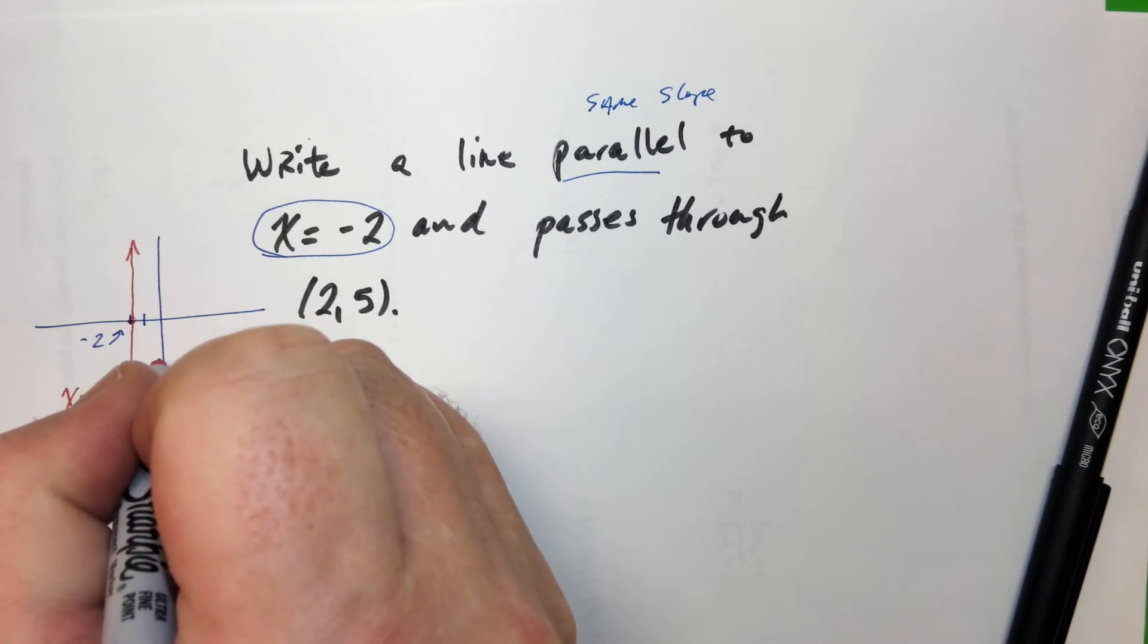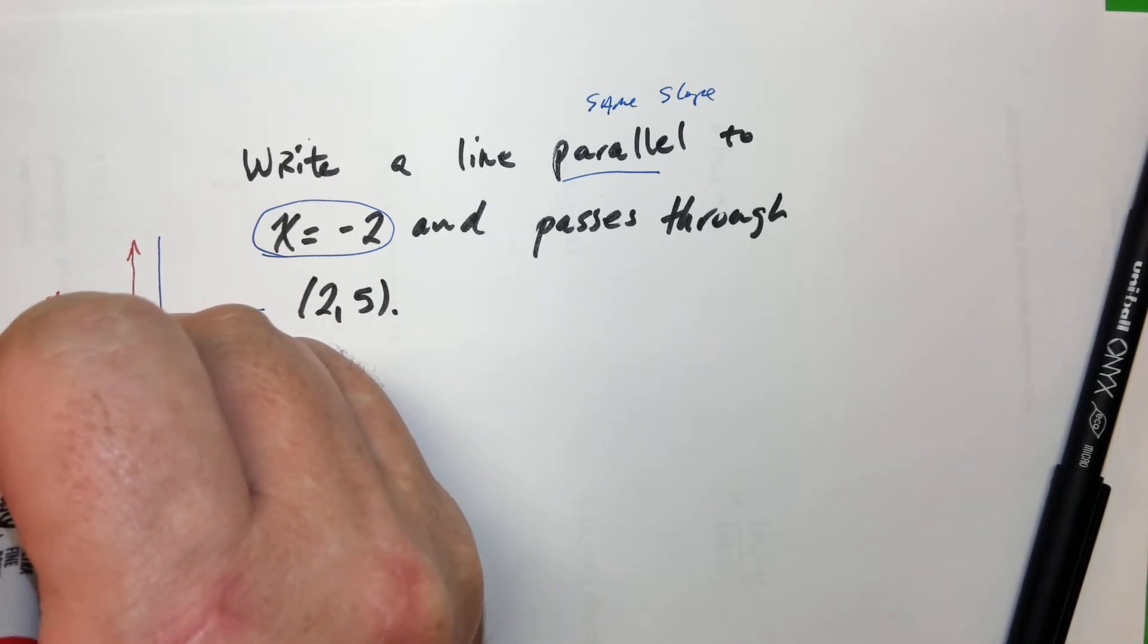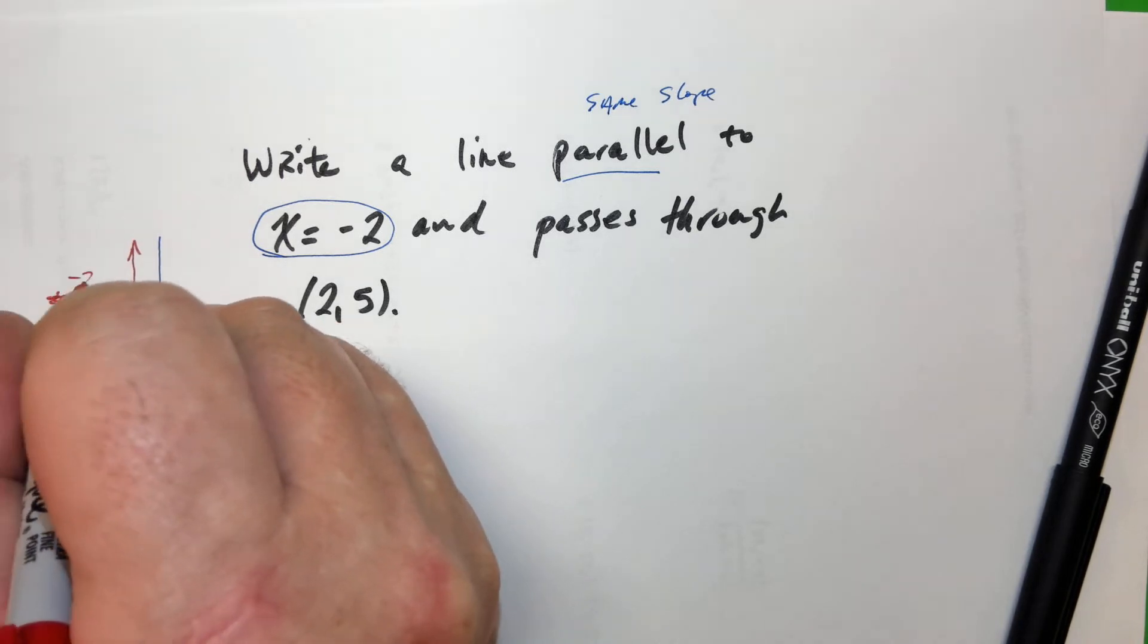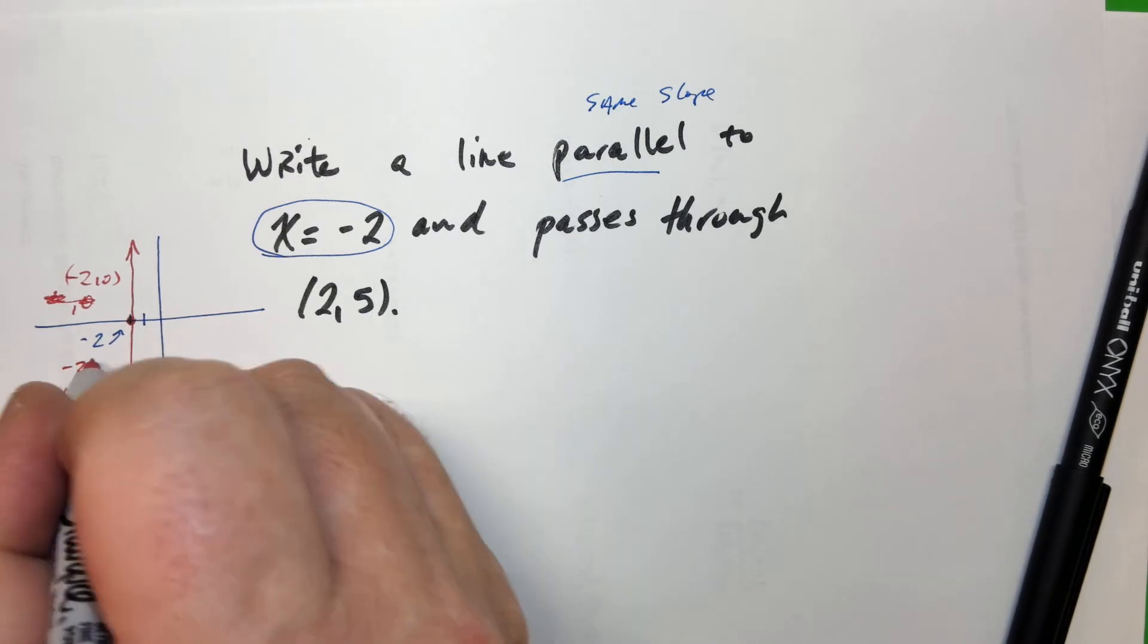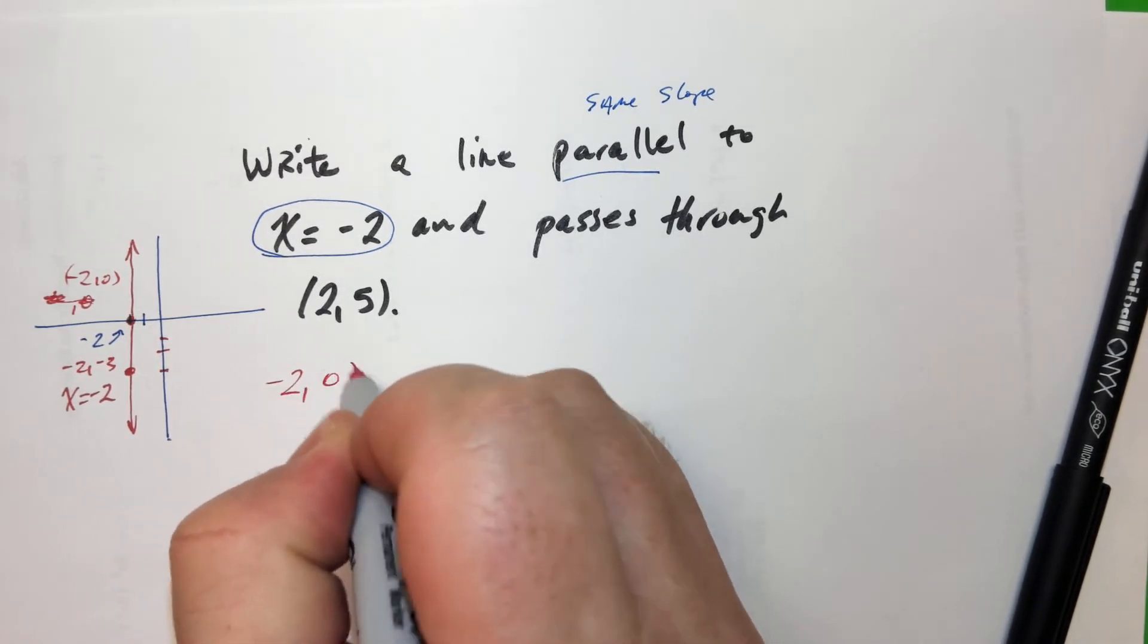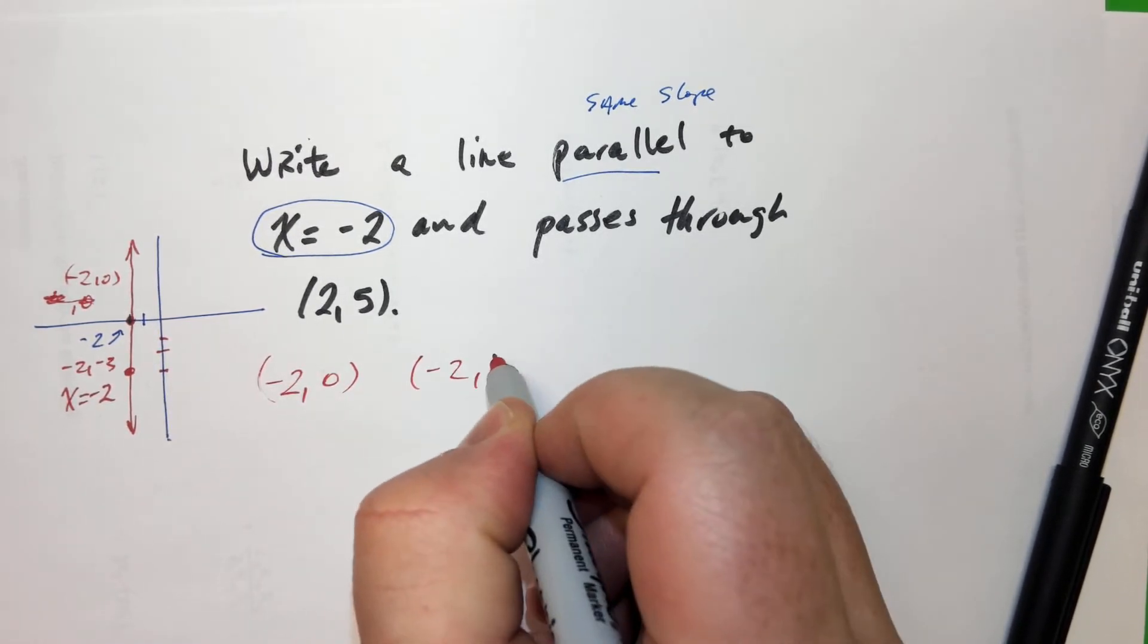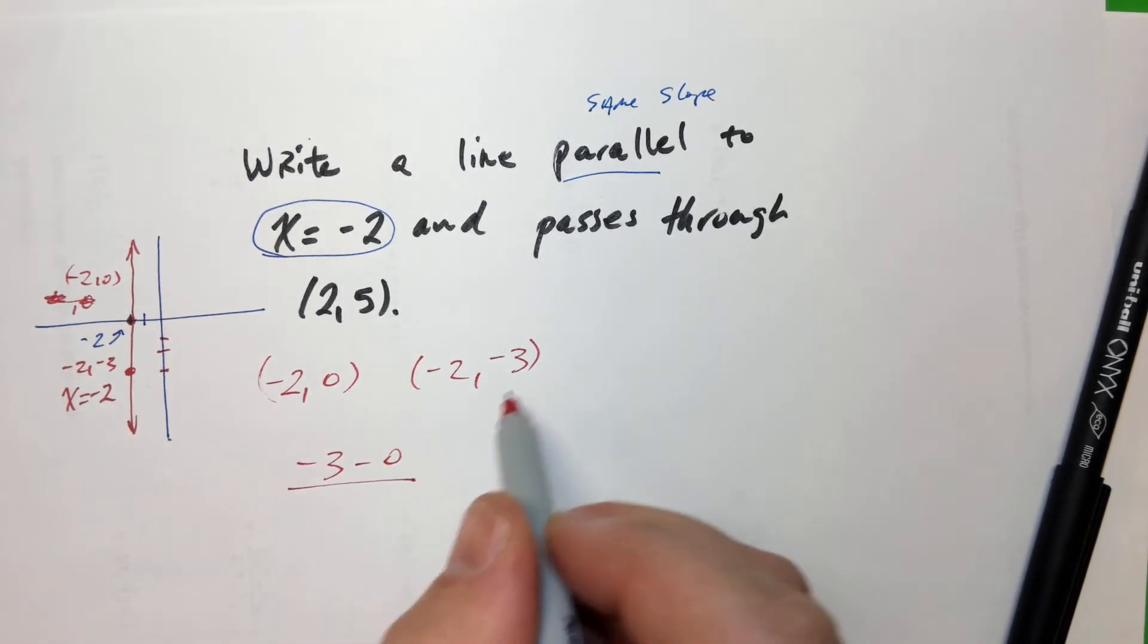Because you know the slope formula, you take two points. So let's take this point right here. Negative 2, sorry. This point right here, negative 2, 0. And let's pick this one right here. Let's say that's negative 2, negative 3 for something. So if we did the slope formula, let's see. These are our two points. So minus 3 minus 0, negative 2 plus negative 2. That's negative 3 over 0.